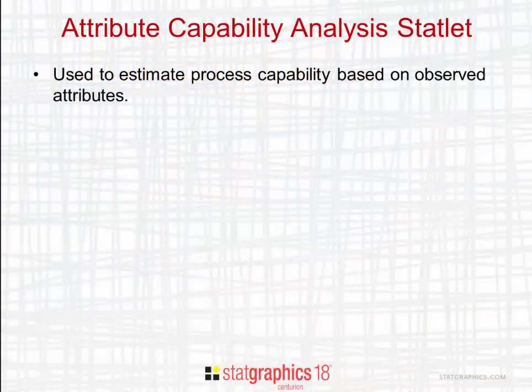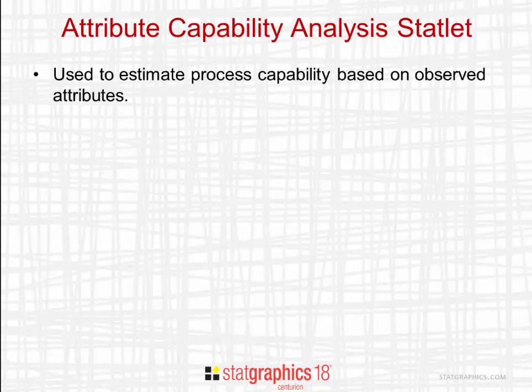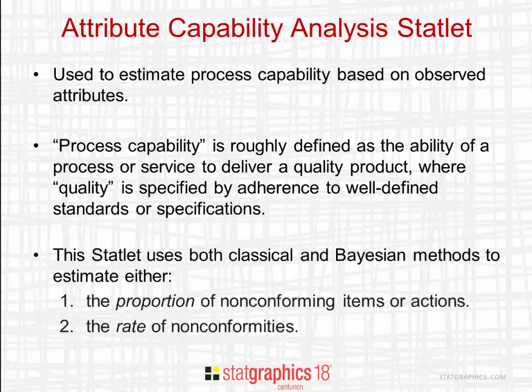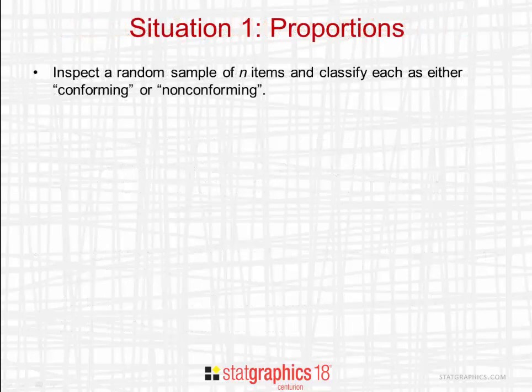The Attribute Capability Analysis Statlet is used to estimate process capability based on observed attributes. Process capability is roughly defined as the ability of a process or service to deliver a quality product, where quality is specified by adherence to well-defined standards or specifications. This statlet uses both classical and Bayesian methods to estimate either the proportion of non-conforming items or actions or the rate of non-conformities.